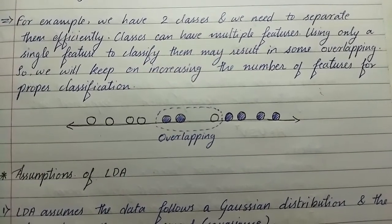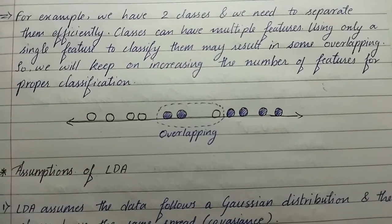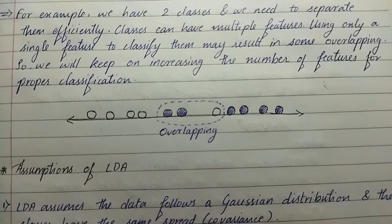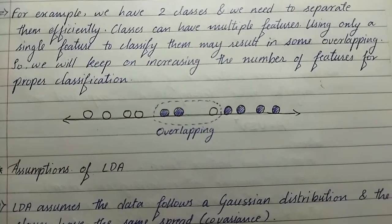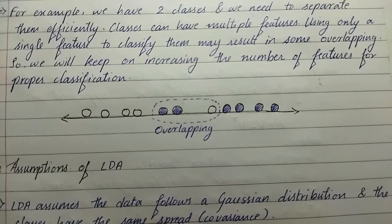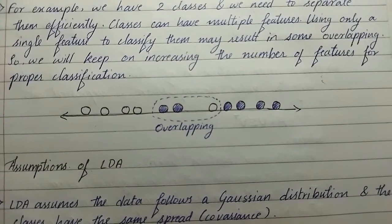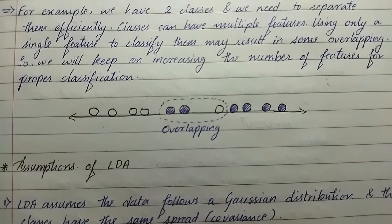Classes can have multiple features. Using only a single feature to classify them may result in some overlapping, so we keep on increasing the number of features for proper classification. Here is a diagram that shows how the overlapping happens.